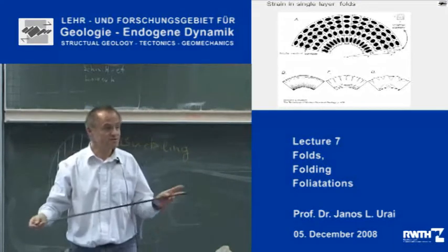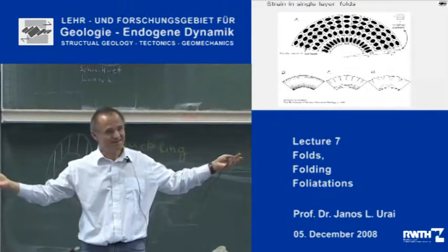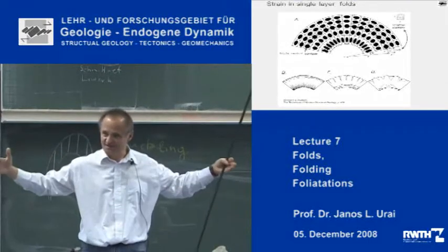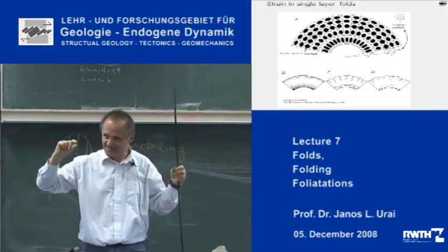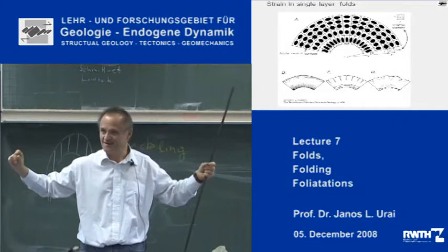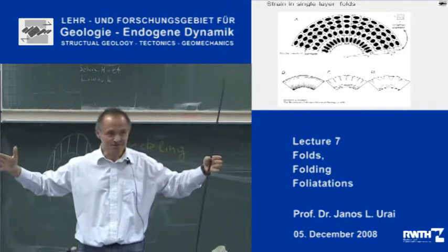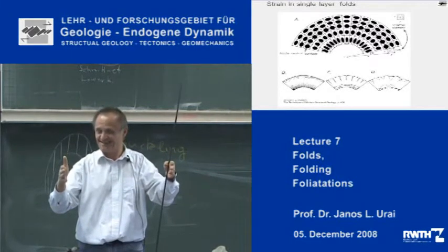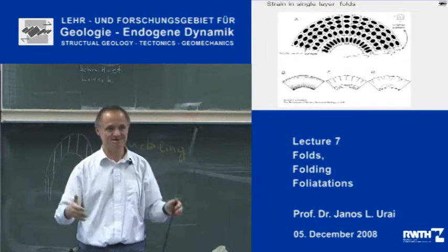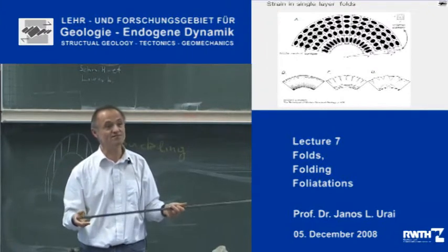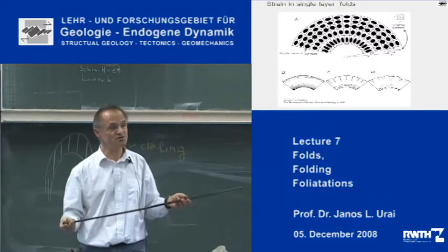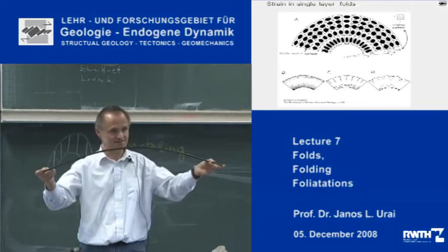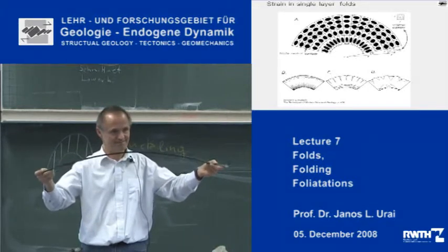Of course, layers are very long, and in that respect the ratio between the length and the thickness is very, very big. So if you want to shorten layers, then they will buckle. Buckling — knicken — is a very common way of destabilizing a layer in the Earth.